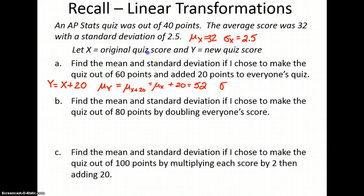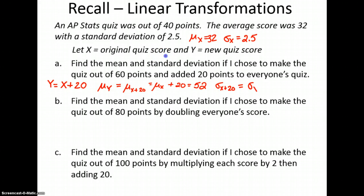The standard deviation of X plus 20 is just going to be the standard deviation of X. Remember, adding doesn't change the spread. It's still the same spread out, just in a new range, so the standard deviation is still 2.5.